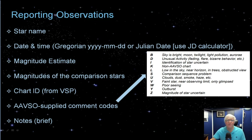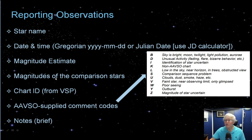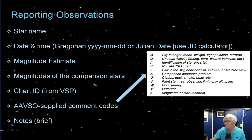To report your observations, you'll need to provide the star name, the date and time in either Gregorian or Julian date format, the magnitude estimate of the variable star, the magnitudes of the comparison stars you used, the chart ID from your VSP chart, and optionally some AAVSO comment codes. For example, if the sky was bright from light pollution or full moon, put B; if you had poor seeing, put W. There's also a placeholder for brief notes, though that's not required.